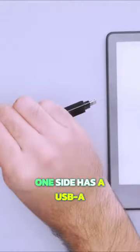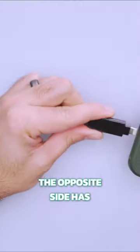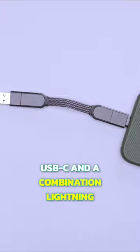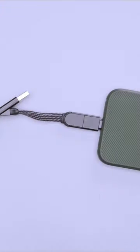One side has a USB-A or USB-C port that plugs your device into a wall charger or battery bank. The opposite side has USB-C and a combination lightning and micro USB plug, so you can charge the latest tech and older gear.